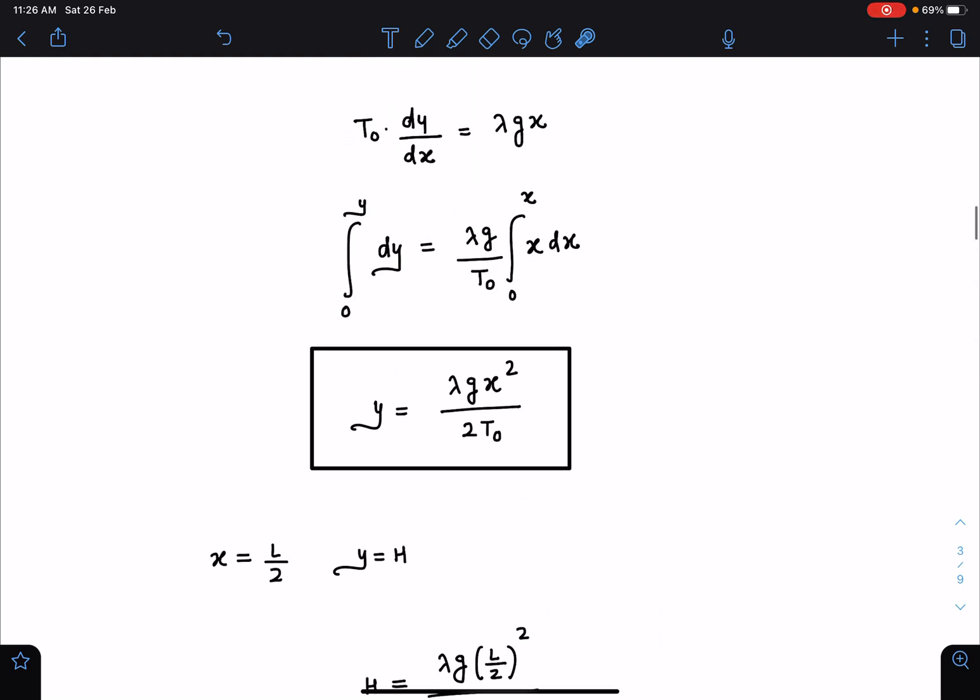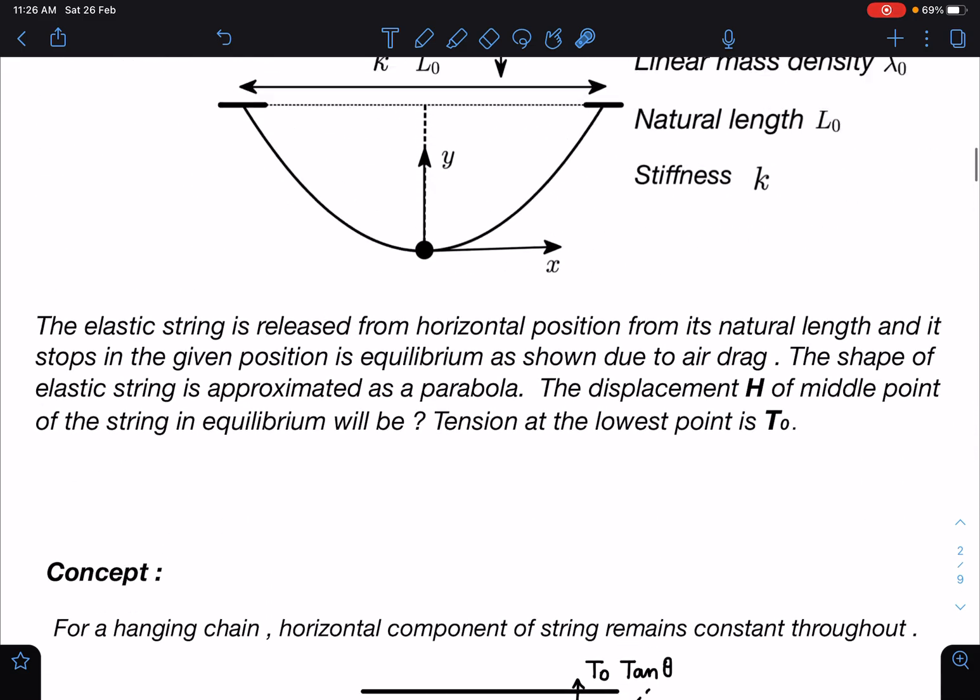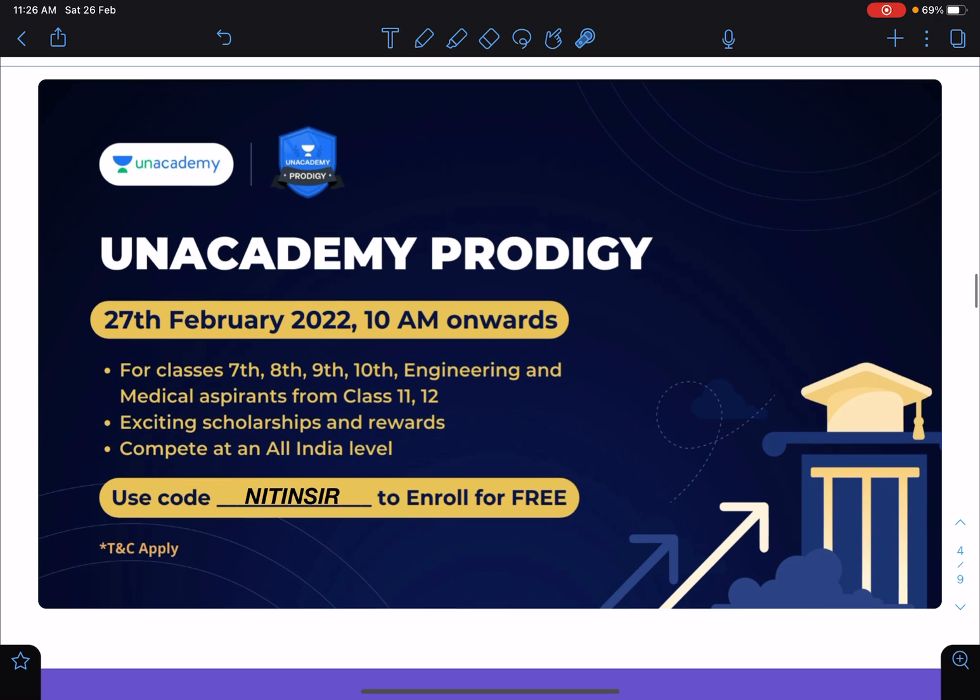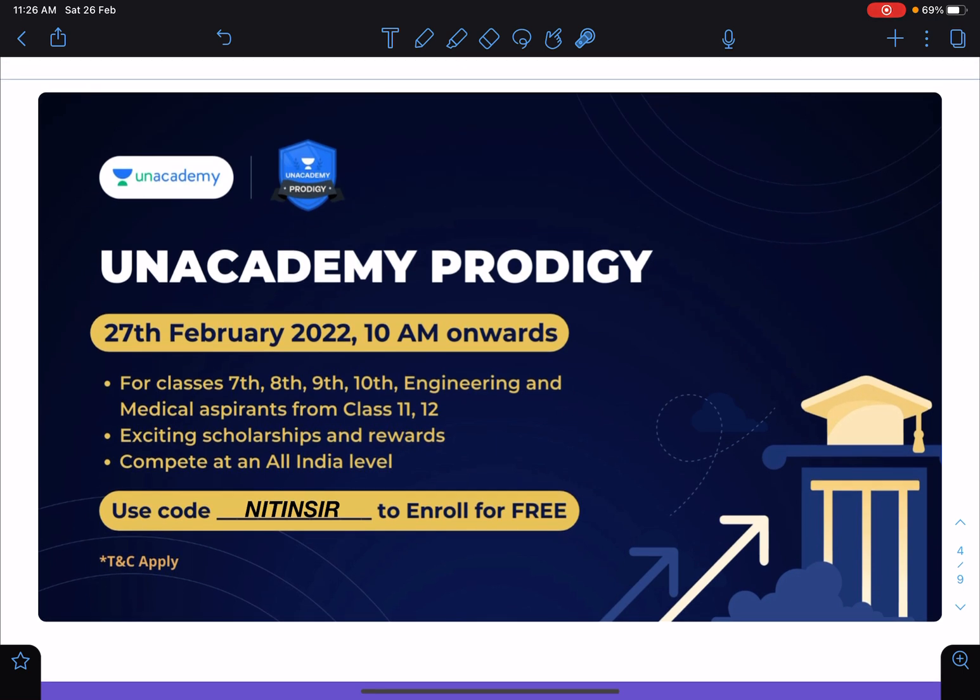So I hope you have understood this. It's a very simple problem within the JEE domain. This is the last attempt of Unacademy Prodigy, which is happening on 27th of February, 10 AM onwards. For class 7, 8, 9, 10, and 11, 12, all students can write.